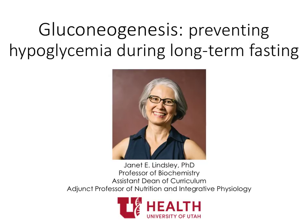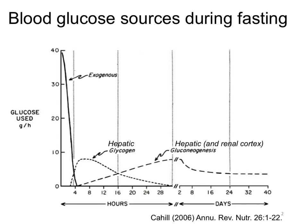Welcome to this mini-lecture on gluconeogenesis, or how we synthesize glucose to prevent hypoglycemia during long-term fasting. Gluconeogenesis, occurring in the liver and the kidney cortex, is required for maintaining blood glucose levels during long-term fasting.